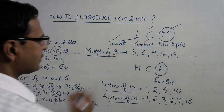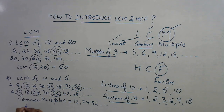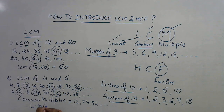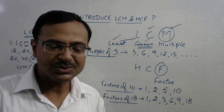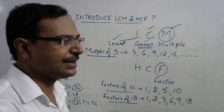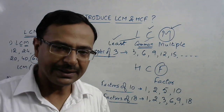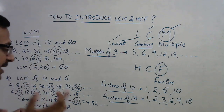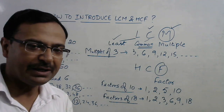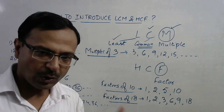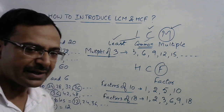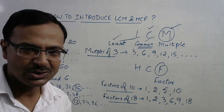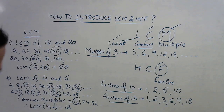Continuing: 24 is common, 36 is common — so the common multiples of 4 and 6 are 12, 24, 36, and many more. Now come to L — least means the smallest one. So the LCM of 4 and 6 is 12, the smallest common multiple. If you teach students the meaning of the word LCM, they will understand why it is 12: because among all common multiples of 4 and 6, the smallest is 12.